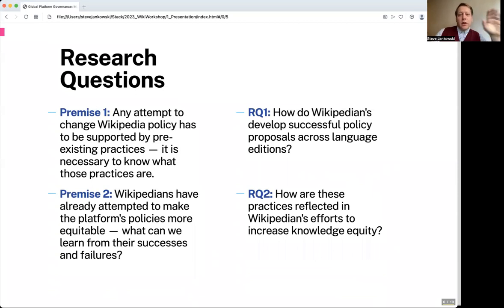Currently, we are working on research question one. How do Wikipedians develop successful policy proposals across language editions? And then afterwards, we'll be addressing how are these practices reflected in Wikipedian efforts to increase knowledge equity.